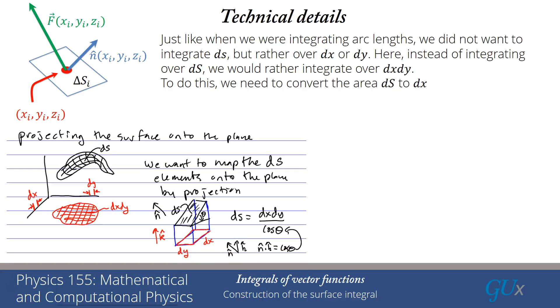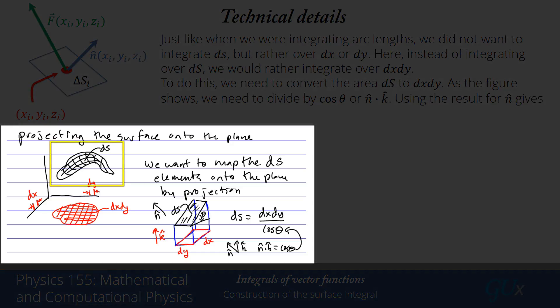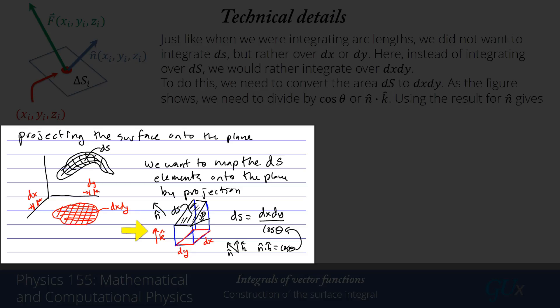To do this conversion, we work out some geometry. On the left, we have our curved patches with ds elements, which we project onto the plane to get dx and dy. Looking at one patch, ds is at some angle relative to the plane. Depending on that angle, the rectangle representing ds will be slightly bigger than expected — equal to dx dy divided by cosine θ. The cosine of θ is just the unit normal dotted into k-hat, so cosine θ = n·k.